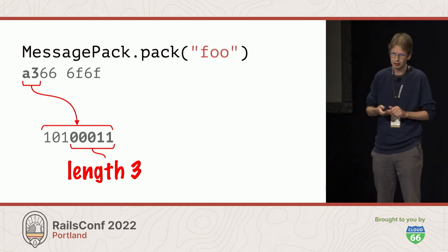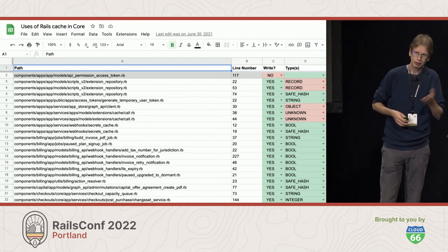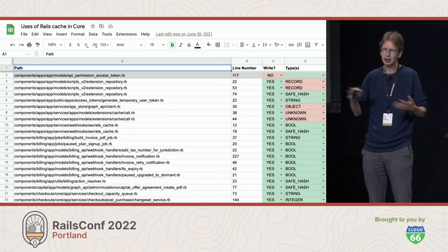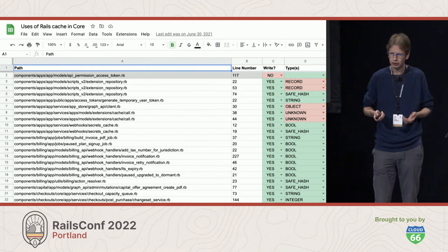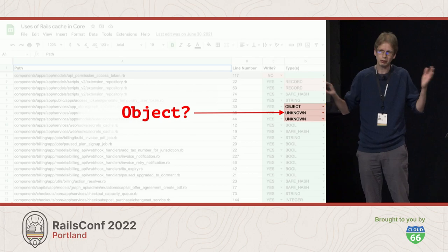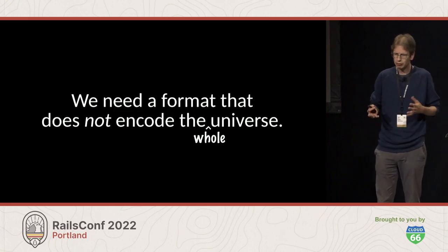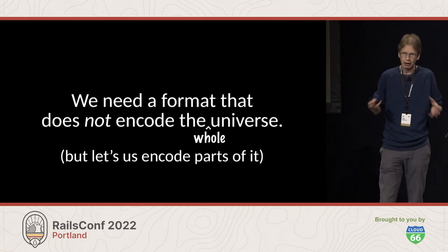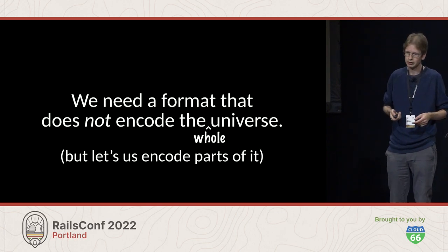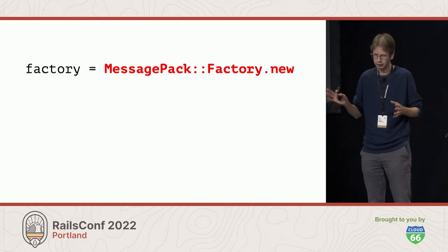We grepped our core monolith to see where we were calling Rails.cache.write and Rails.cache.read to understand what kinds of things were going into the cache. Of course there's a lot beyond core types — records and objects we don't even know. So we need more than just the default MessagePack types. We need a format that does not encode the whole universe but allows us to encode parts of it. As it turns out, MessagePack actually does this — and this is really the killer feature for us.